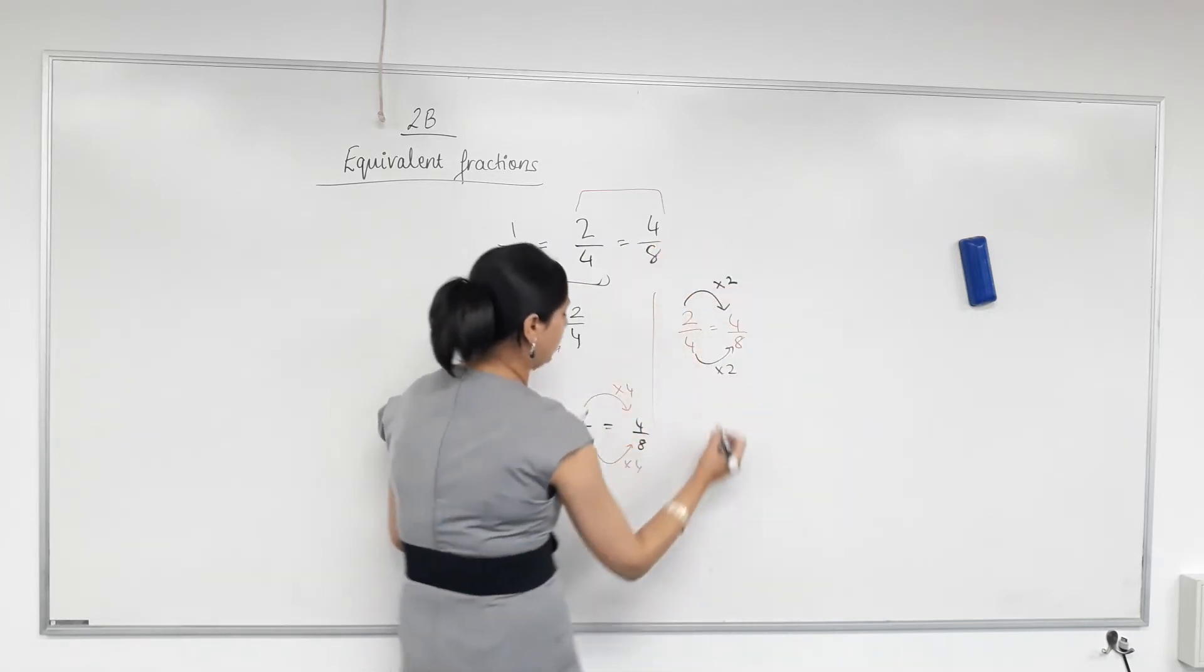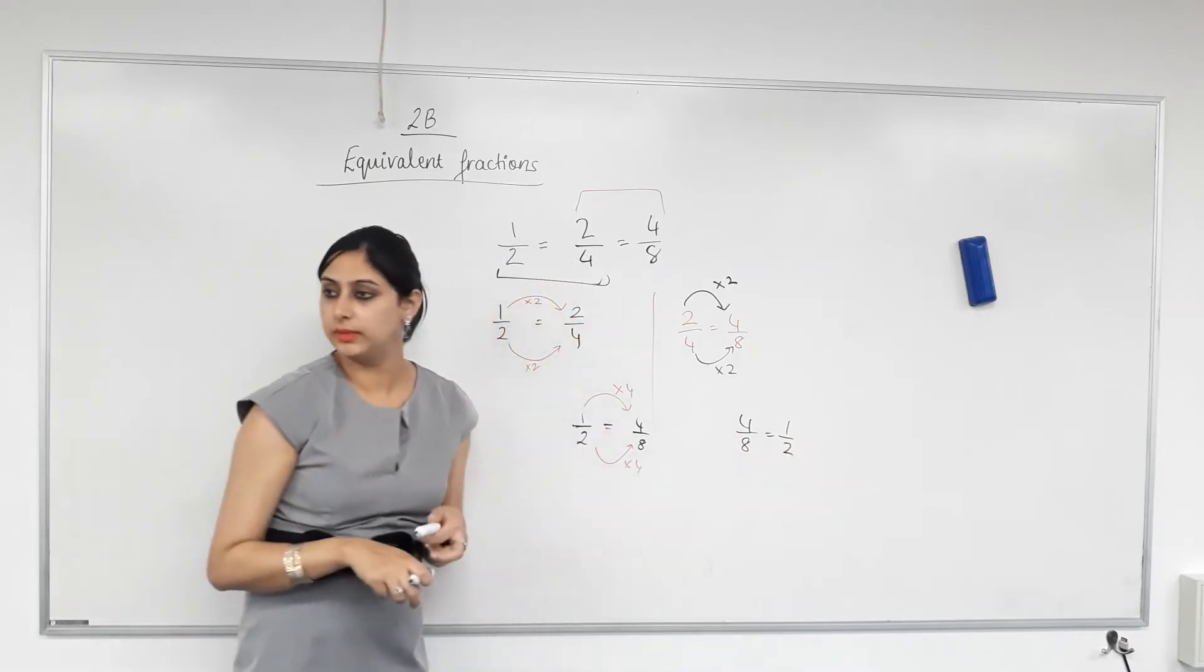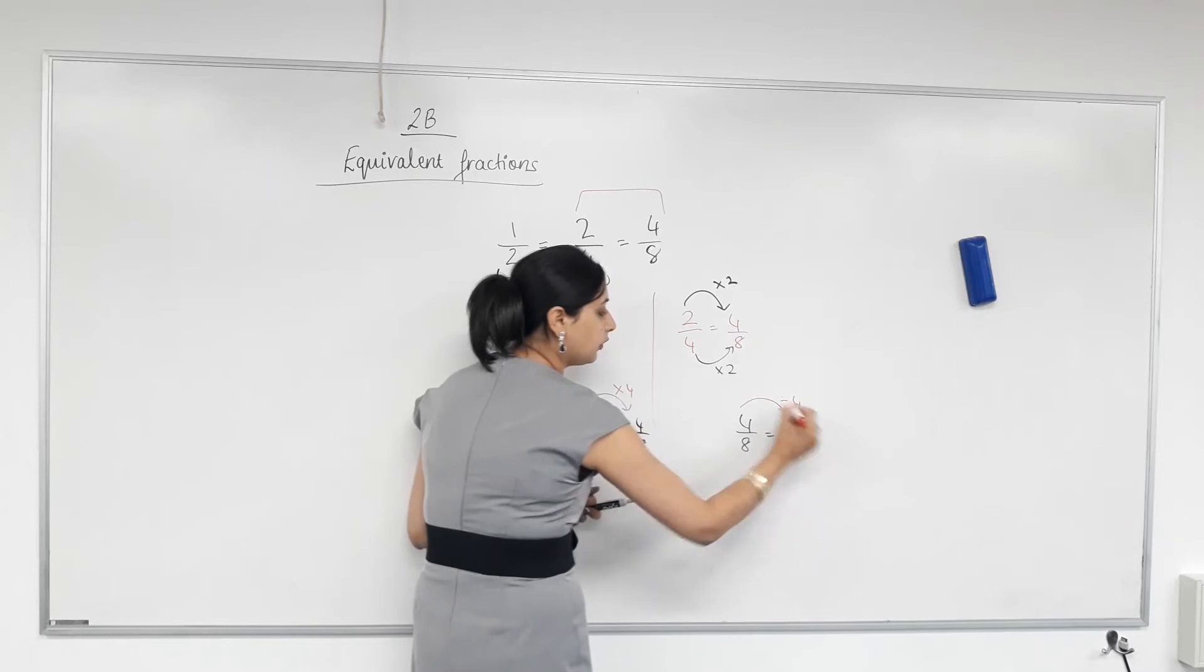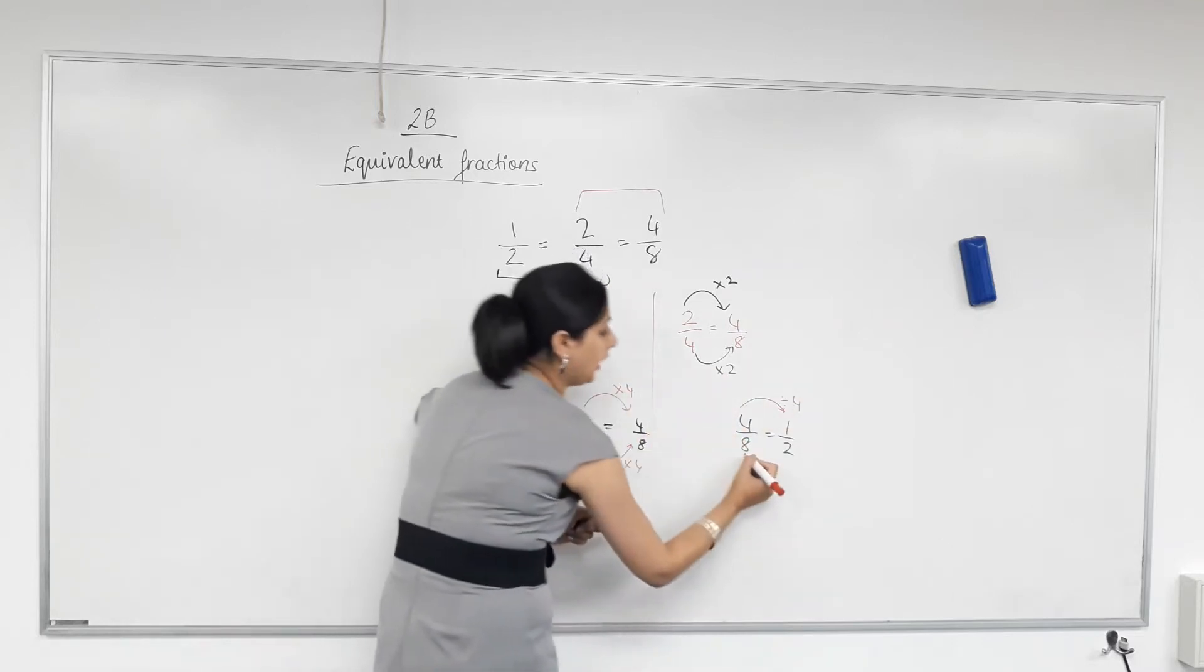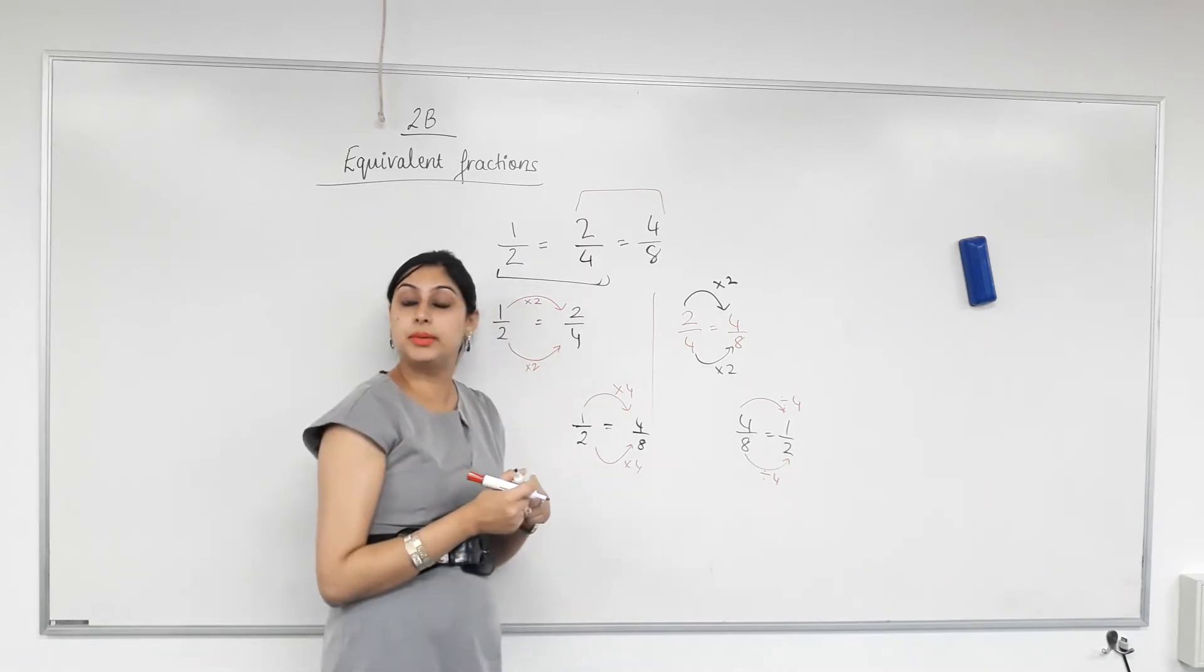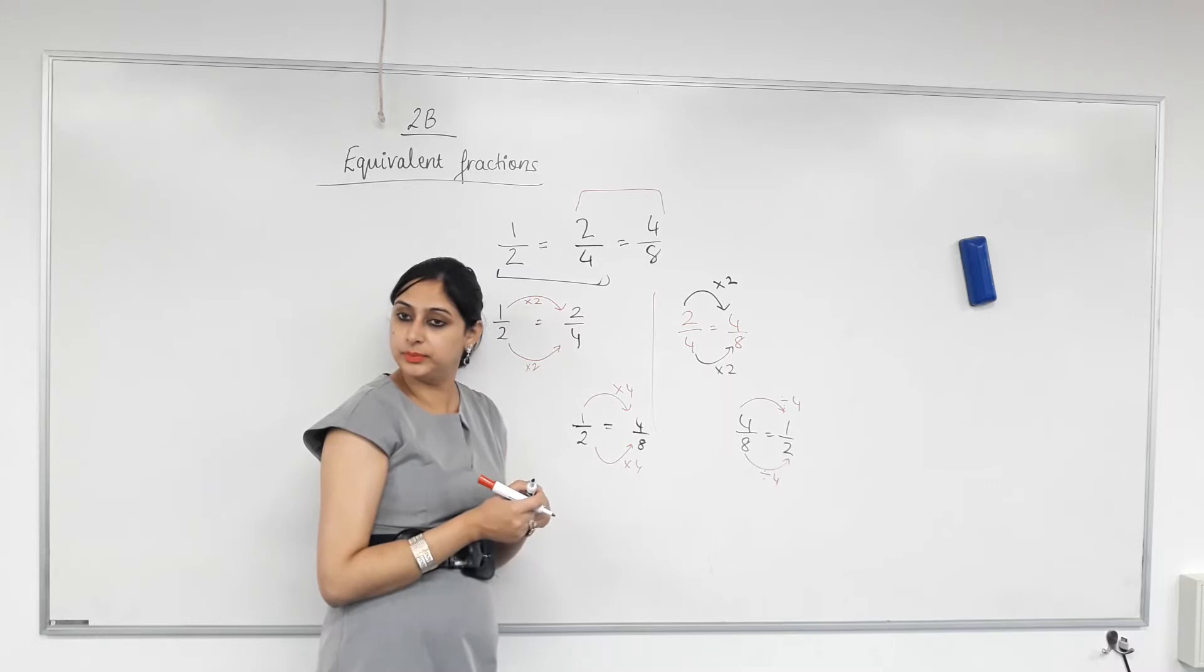Let's see this. Let's see if we have to go from four eighths to a half. They are equivalent, aren't they? Yes. Four divided by what is one? Four. And isn't eight divided by four two? Yes. As long as you're multiplying both top and bottom by the same number or you're dividing both top and bottom by the same number, you get a fraction that is equivalent to the first one. Happy with that? Yes.